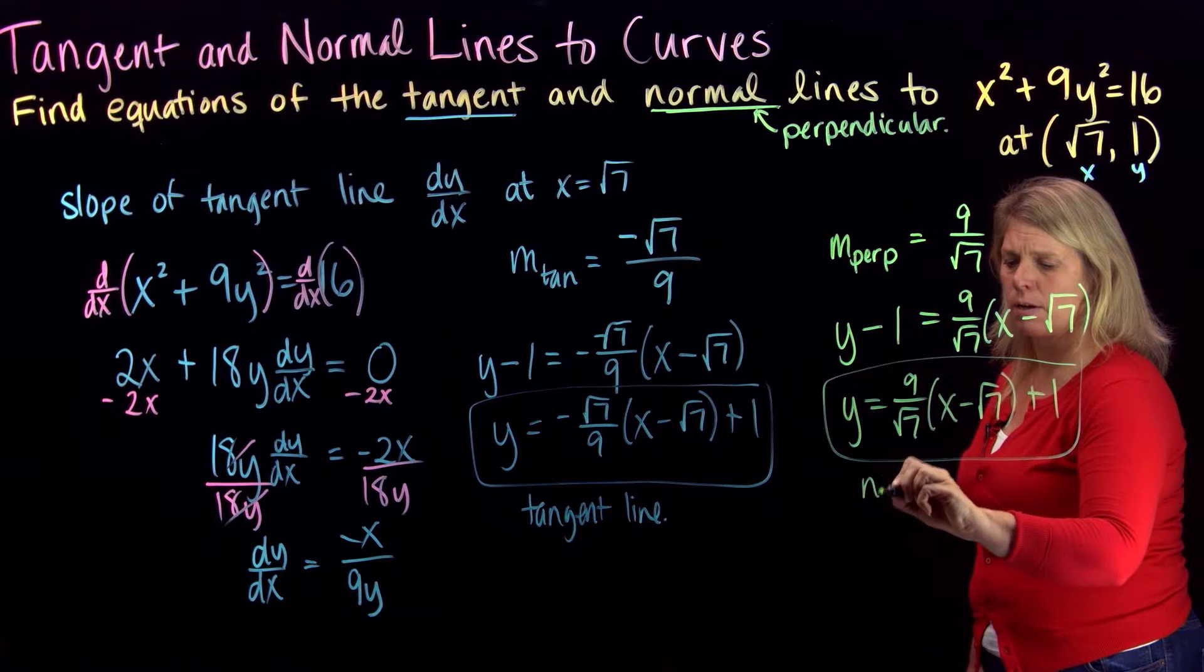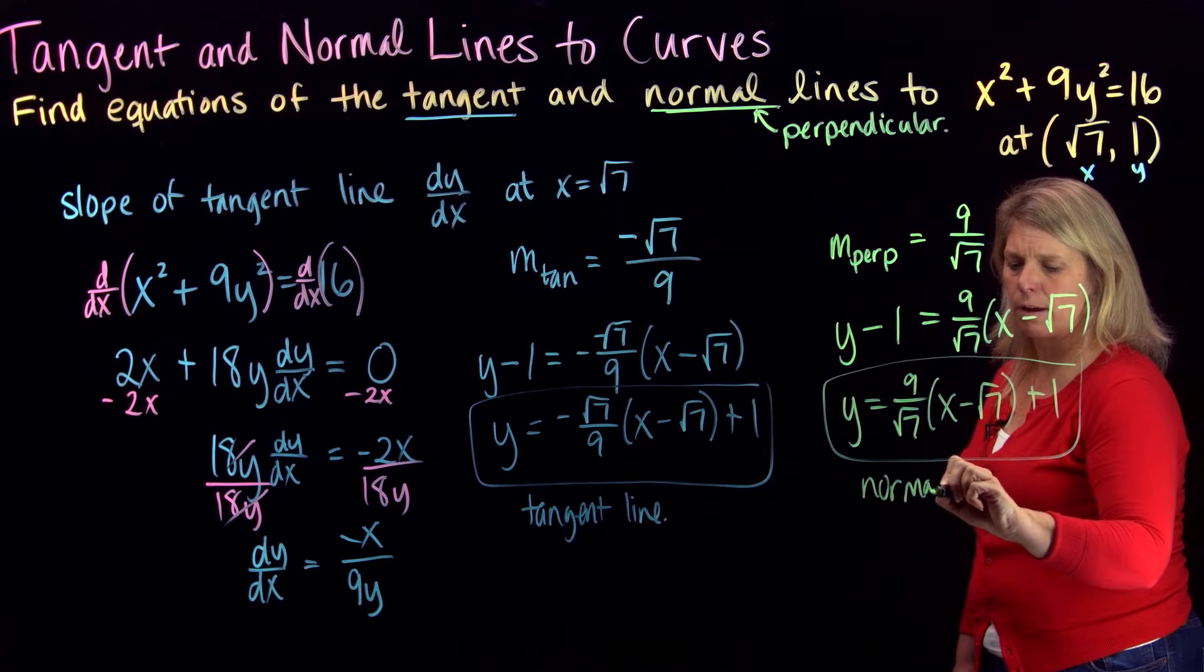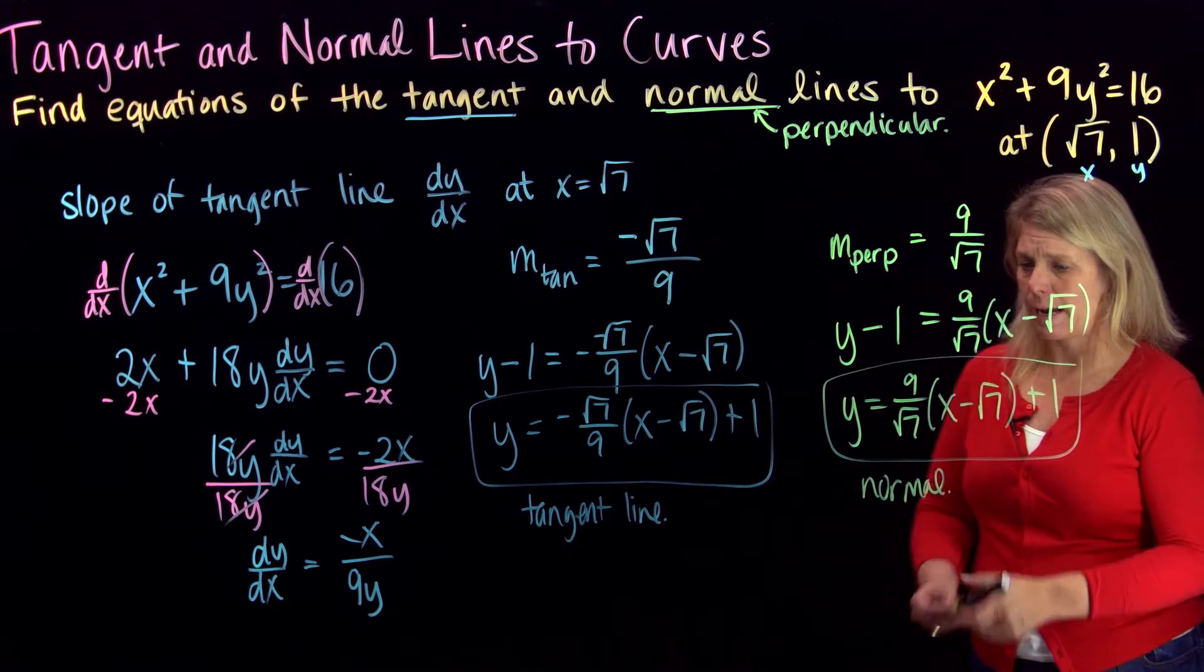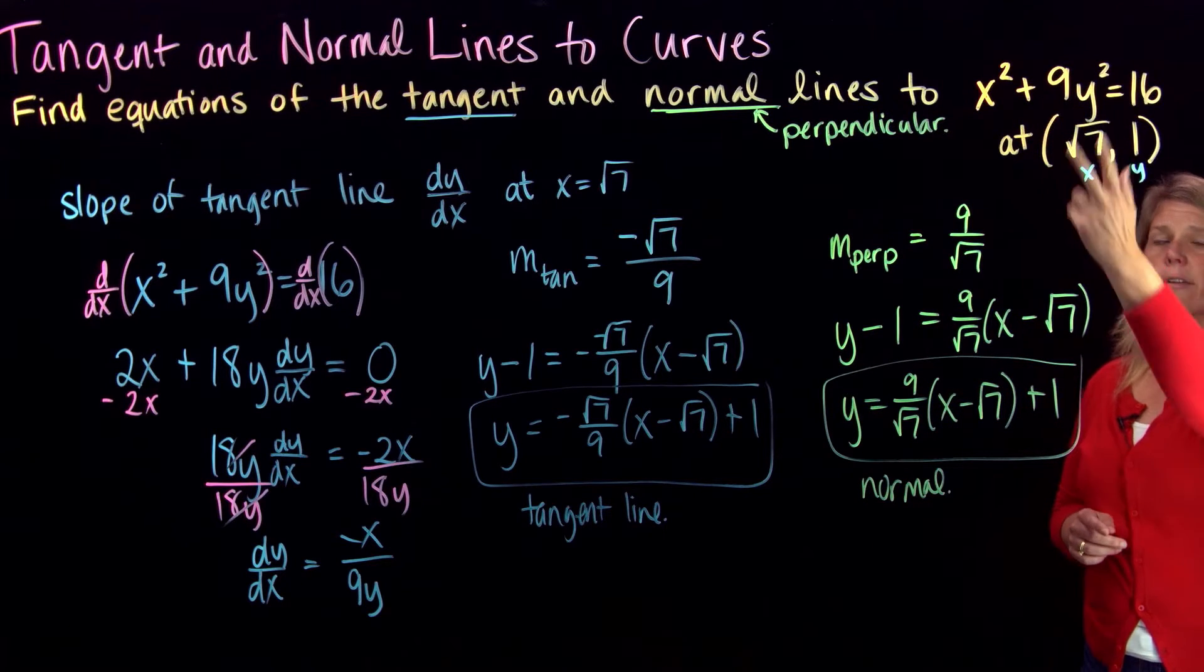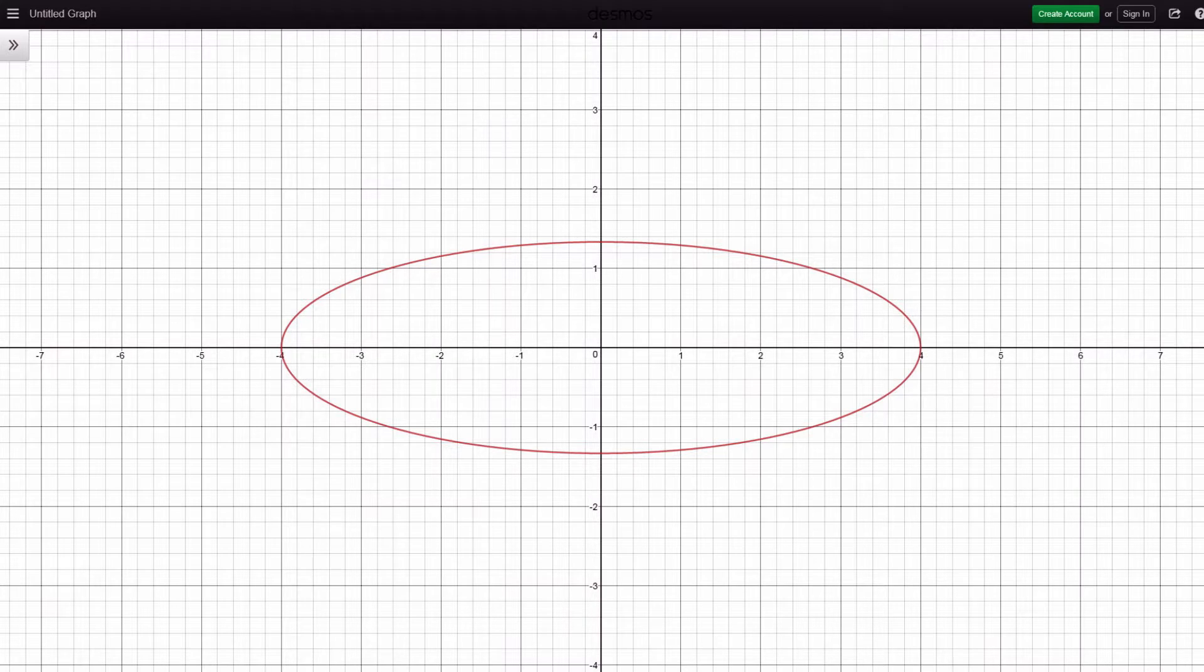So let's go ahead also and look at the graph of that to make sure that our lines look tangent and perpendicular to the graph of this curve. Okay, so what you see here is a graph of the equation x squared plus 9y squared equals 16. That's an ellipse that you might remember from previous algebra classes. And we're going to look at those lines. I've typed them in, but let's just think a little bit about where those would be at.